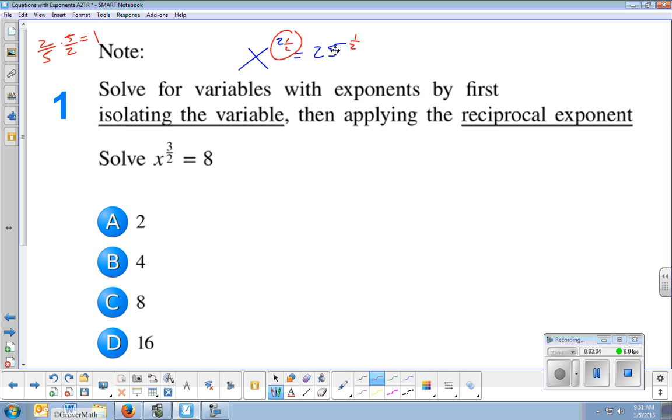But anything times its reciprocal is 1. So if I want to get rid of an exponent, I multiply by its reciprocal. But I have to do that on both sides. So I raise both sides by an exponent of a half. And 25 to the 1 half is really the same thing we know as a square root of 25 is 5.